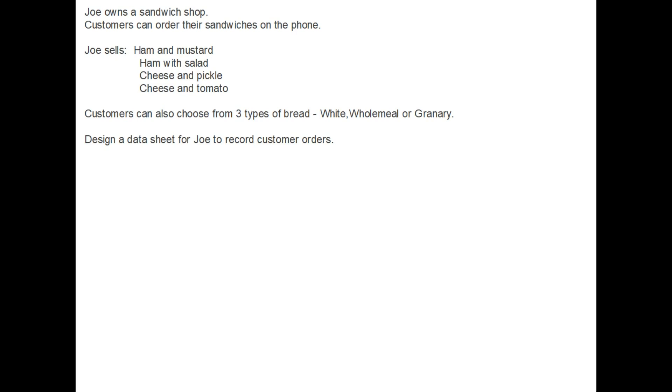Let's move on to a situation where you are asked to design a table. Now it's important to say that the absolute specific design is not so important. What is important is that you finish up with a table, or in this case it's been described as a data sheet, which works for the question. Now what do I mean by works for the question? Well let's have a look at this question. Joe owns a sandwich shop. Customers can order their sandwiches on the phone. So he sells four different types of sandwich and he's got three different types of bread. So the customers could order any of these four sandwiches on any type of bread.